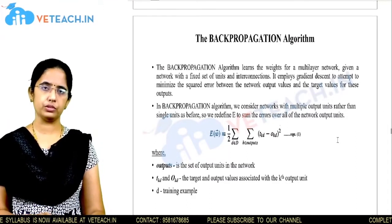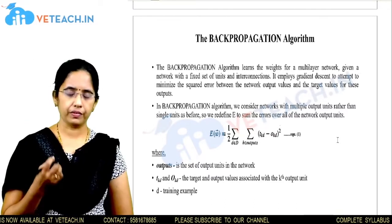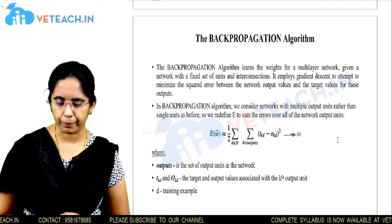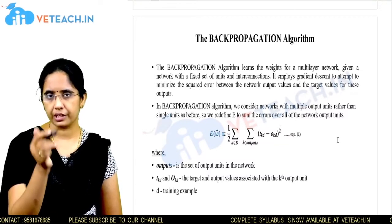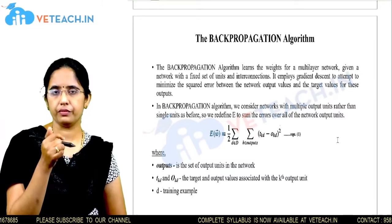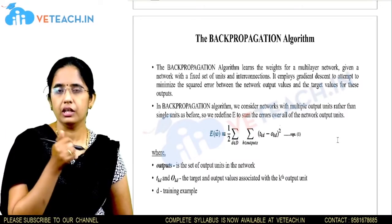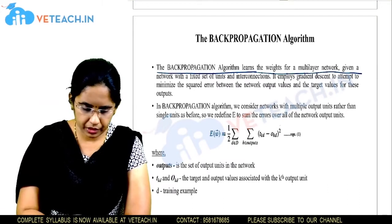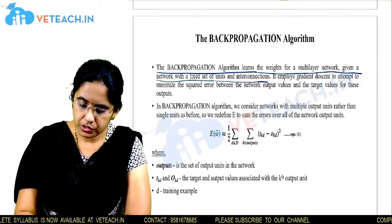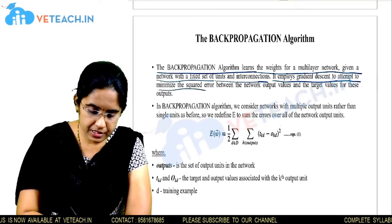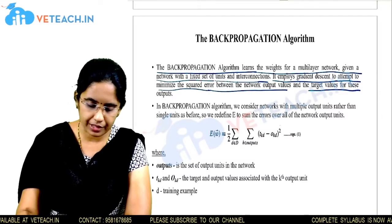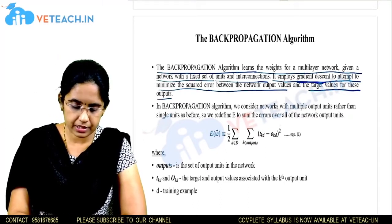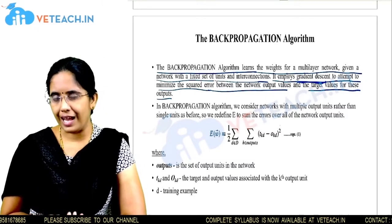Our goal is to find the best weight vector W from the hypothesis space that gives the least error. For this we use an algorithm called back propagation. In a single-layer neural network we used gradient descent, but for multi-layer neural networks we use back propagation to find the best weights that minimize the cost. Back propagation employs gradient descent to minimize the squared error between the network output values and the target values.